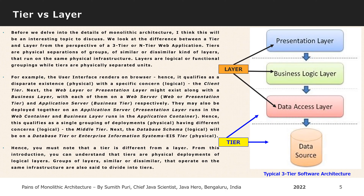This qualifies as a single physical grouping of deployments having different logical concerns — the middle tier. Similarly, the logical database schema will be on a physical database tier or EIS tier. From this introduction, you can understand that tiers are physical deployments of logical layers. Groups of layers, similar or dissimilar, that operate on the same infrastructure are also said to divide into tiers.